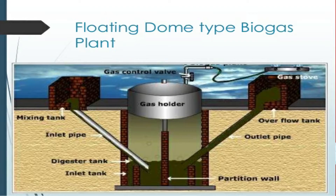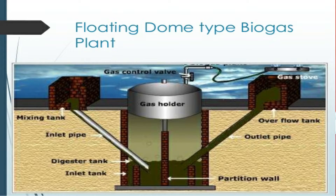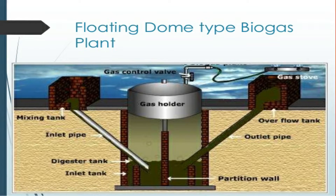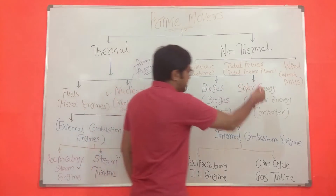Another thermal prime mover is the biogas plant. Biogas is produced from organic waste that is biodegraded by bacteria in an anaerobic environment. Biogas is a renewable energy source produced by anaerobic digestion. This closed system is called an anaerobic digester and produces biogas consisting of methane, carbon dioxide, and other gases. This biogas can be used directly as a fuel for domestic purposes as well as in gas engines.